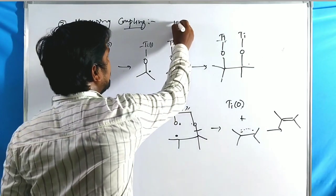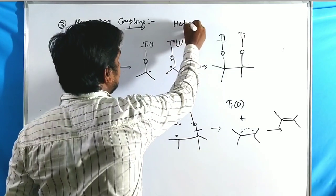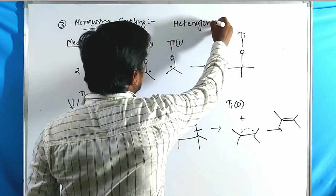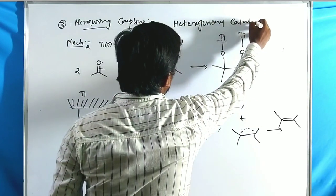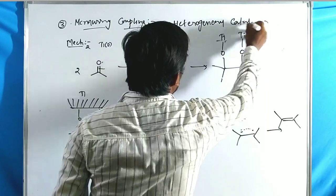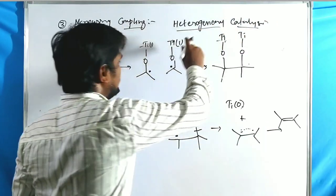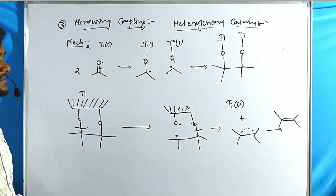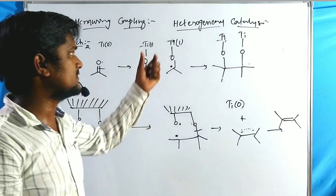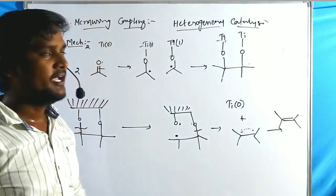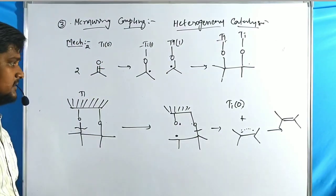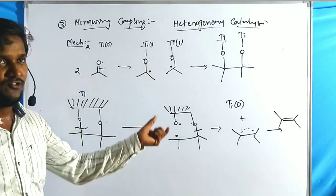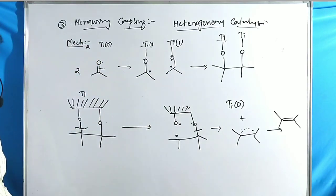McMurray Coupling is an example of heterogeneous catalysis, where the reagent and catalyst are in different phases. This is the simplest mechanism of McMurray Coupling.